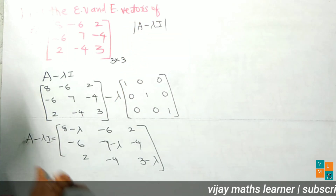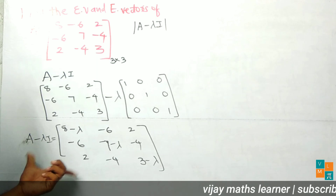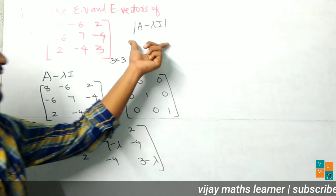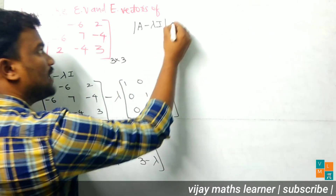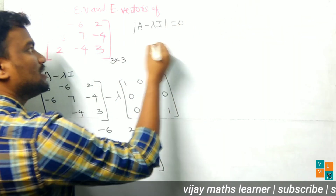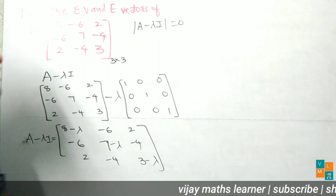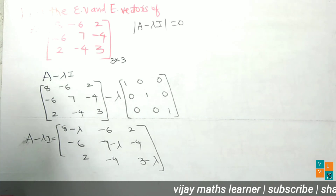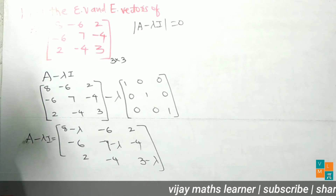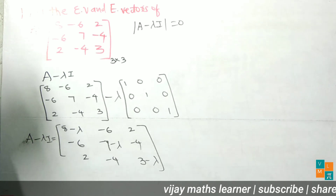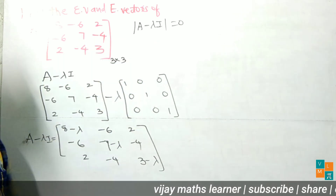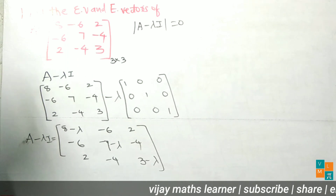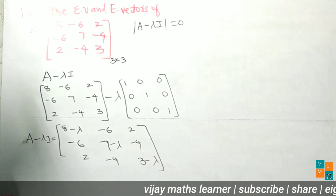To find the characteristic polynomial, we compute the determinant of A minus lambda I. Setting this determinant equal to zero gives the characteristic equation, from which we find the eigenvalues of the square matrix A.